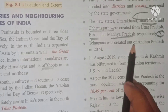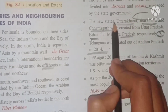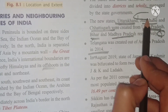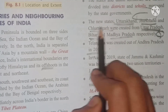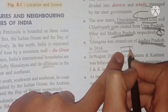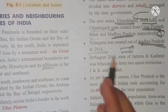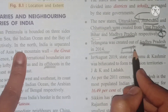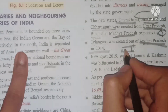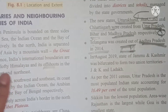Telangana was created out of Andhra Pradesh in 2014. Uttarakhand was created out of Uttar Pradesh, Jharkhand out of Bihar, and Chhattisgarh out of Madhya Pradesh. For example, if Uttar Pradesh is a large state, Uttarakhand is a smaller state taken from it. Similarly, Jharkhand was taken from old Bihar.